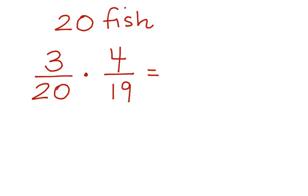3 times 4 is 12. 20 times 19 is 380. We can simplify this by dividing both of these by 4. And we end up with 3 out of 95.